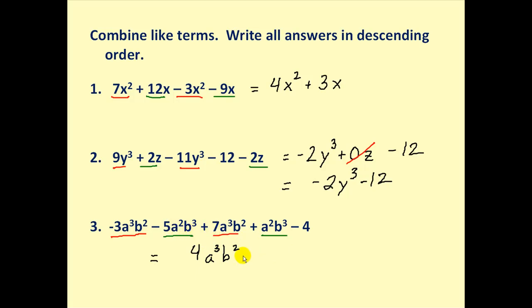The next term will be the a squared b cubed term. And the coefficient of that term will be negative 5 plus 1. Negative 5 plus 1 will be negative 4. So we write minus 4 a squared b cubed.